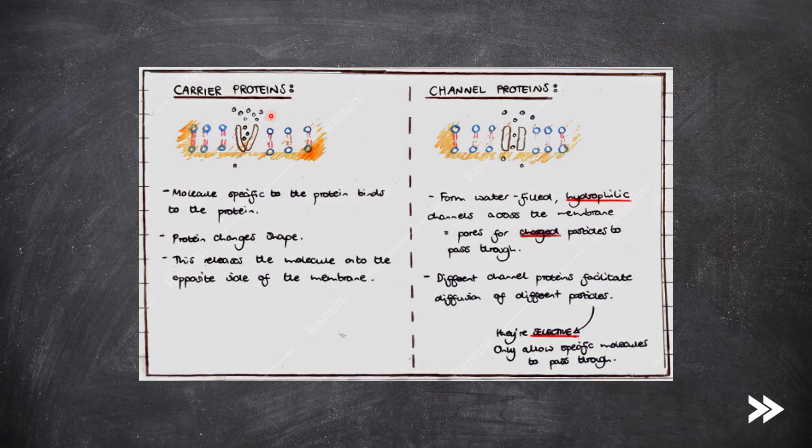As you can see, carrier and channel proteins are both intrinsic proteins as they're found within the phospholipid bilayer. Carrier proteins, I'll talk about those in more detail later on. The molecule specific to the protein binds to the protein. The protein therefore changes shape, which releases the molecule onto the opposite side of the membrane.